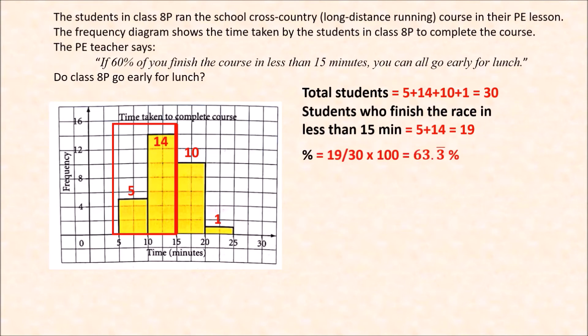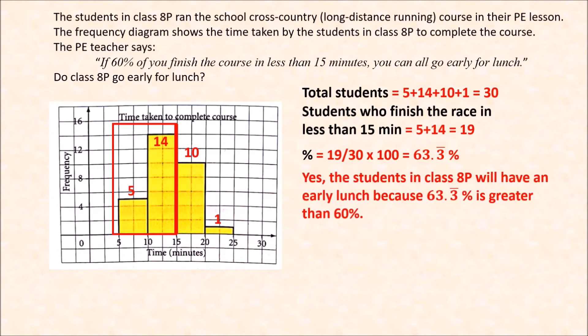The percentage is 19 divided by 30, times 100 — remember, part divided by whole. That gives 63 and one-third percent, or 63.333... (a repeating decimal). So yes, the students in Class 8B will have an early lunch because 63.333% is greater than 60%.